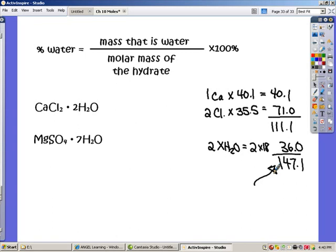So how do we get the percentage now? The percent is part over the whole, the part of it that is the mass of the water, which is 36 grams, divided by the mass of the whole thing, which is 147.1. I'm going to multiply that by 100 just to slide our decimal over a little bit. And when I do that, I find that it's about 24.4 percent.